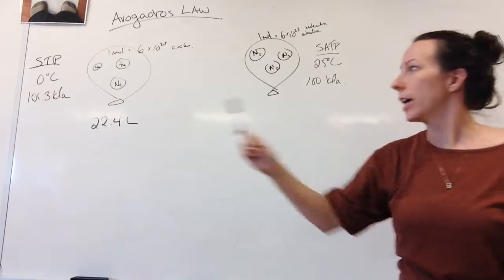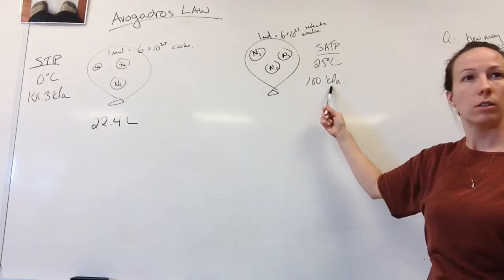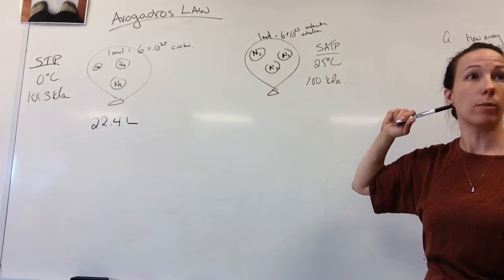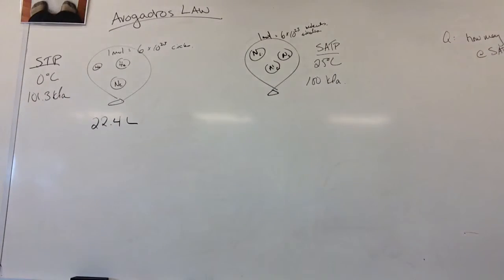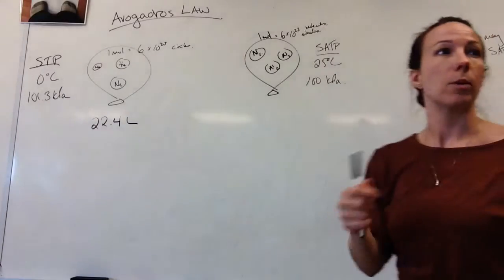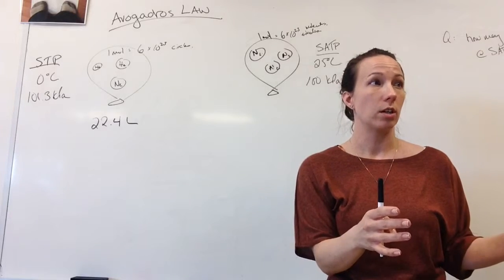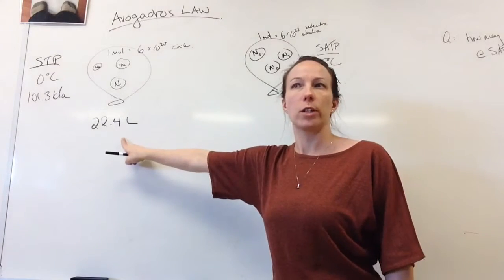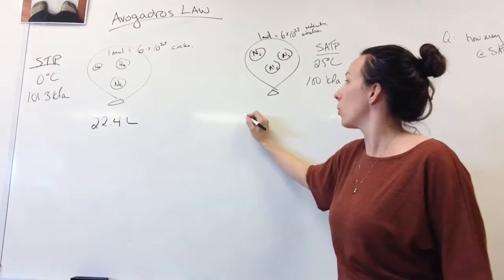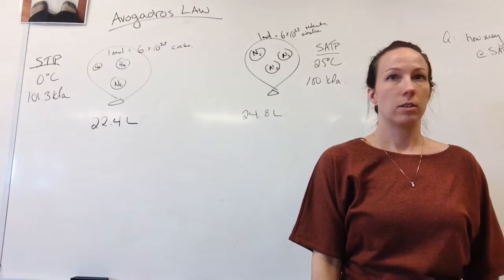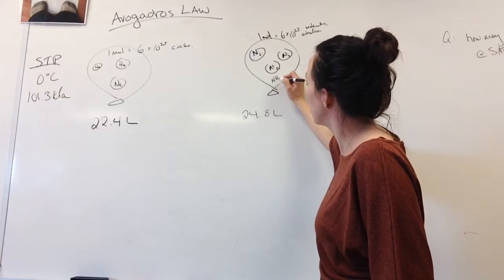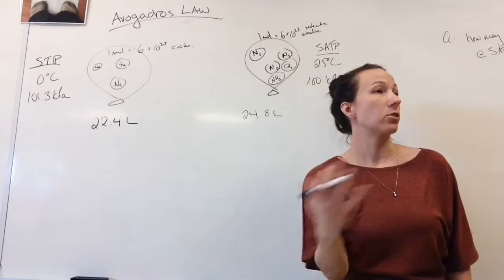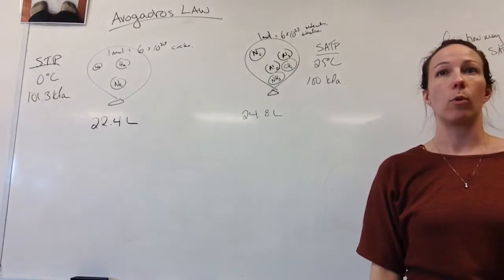According to Boyle's Law, if I decrease the pressure, the volume increases. I'm decreasing the pressure, so the balloon should be bigger. The temperature is also higher, so molecules are moving faster — the balloon should expand as well. The volume is no longer 22.4, but now it's 24.8 liters, no matter what gas it is. If I had half a mole, it would be 12.4 liters.